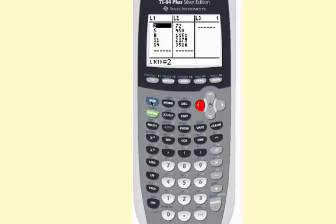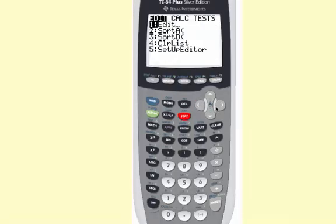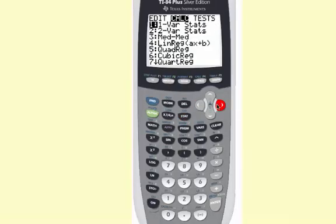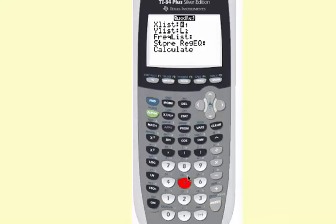And we already said that the quadratic model would be better for this situation based on the second differences, so that's what I'm going to calculate. So I'm going to go to stat and then right one to the calculate menu. And I'm going to choose quad regression which is option 5. That will fit the data to quadratics.